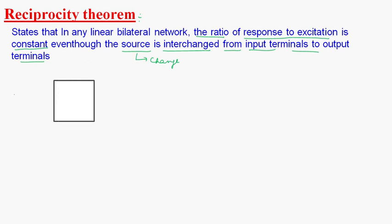Let us consider a network like this, having all the circuit parameters. Here a voltage V is connected — excitation to the circuit — which will give us a response. According to Reciprocity Theorem, if we change the place of this excitation to the output side, then the ratio will be constant.